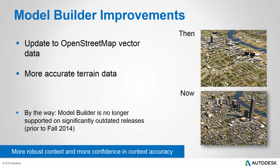Why is all this important? The update to the OpenStreetMap data and the more accurate terrain data means you have more robust context and more confidence in the accuracy of that context to use as the backdrop for your design.